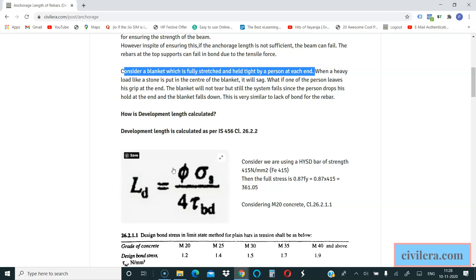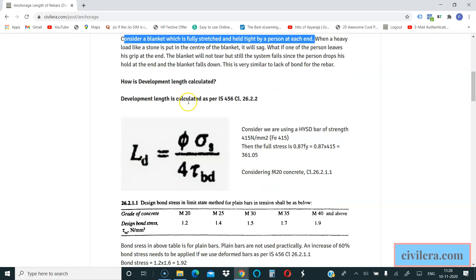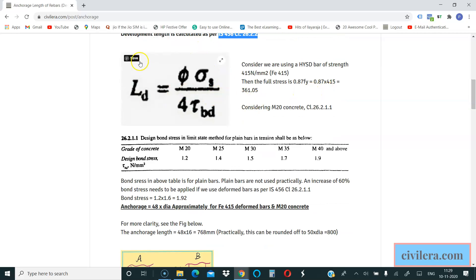Now what is the proper anchorage that you need? Many by heart does 50 times diameter of the bar. That's not really right to by heart it like that because it depends on the grade of concrete and also on the grade of rebars. It's okay to by heart it once you know this, once you know that it varies with the grade of concrete and steel. So here is a quick formula as per IS 456 Clause 26.2.2.